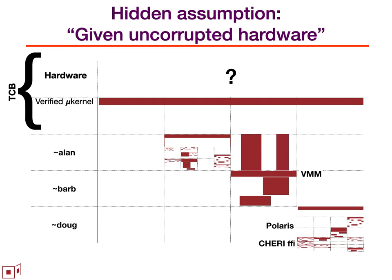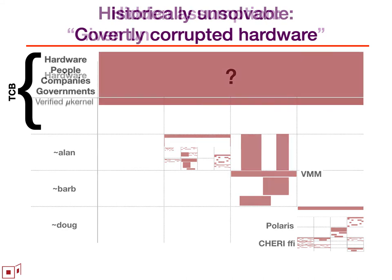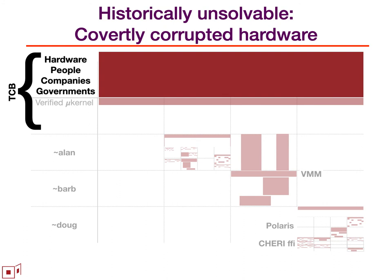However, there's still one big hidden source of risk, hidden in the assumption universal to software security: given uncorrupted hardware. All software security effectively starts with that hidden assumption, and there's nothing that justifies it. In fact, the supply chain delivering our hardware to us has many people with their hands in it — people, covered companies, governments — and all of them can introduce trap doors that are effectively undetectable. And if those trap doors are in there, then everything we're doing in software security becomes meaningless.